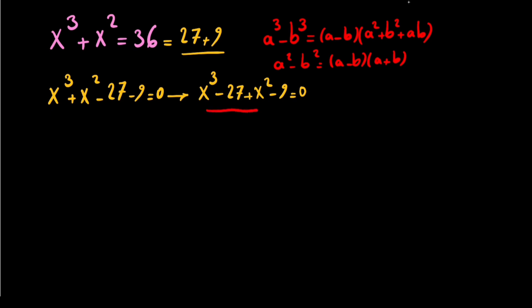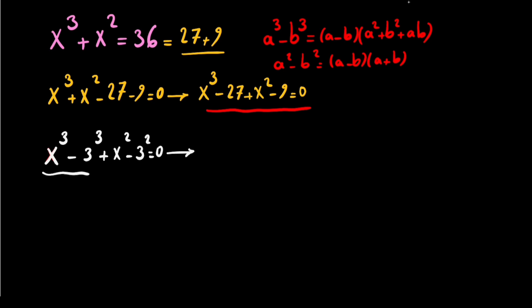Looking at our equation, we can write it as x cubed minus 3 cubed plus x squared minus 3 squared equals 0. The first part is a difference of cubes, so we write it as (x minus 3)(x squared plus 3x plus 9).